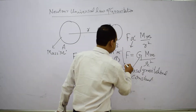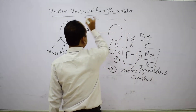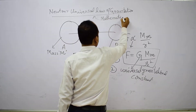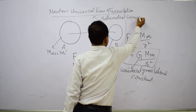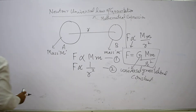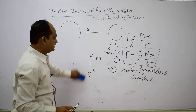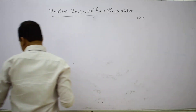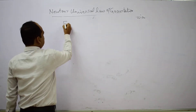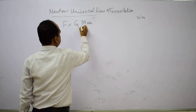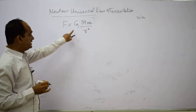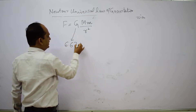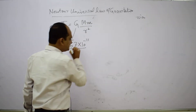This is the mathematical expression for Newton's universal law of gravitation. We will now discuss the universal gravitational constant G. From the relation F equals G M m upon R square, the value of G is 6.67 times 10 to the power minus 11.